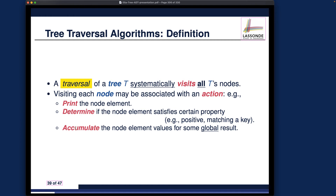We may also want to accumulate node element values for some global result. The accumulate part might be the more challenging part to get right. The simplest example would be calculating the size of the tree: visit all the nodes systematically and for every node visited, add one, accumulating a global counter. Return that counter after the traversal terminates. I'm going to focus more on the order in which we can do traversals — there are three different ways.